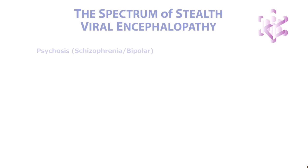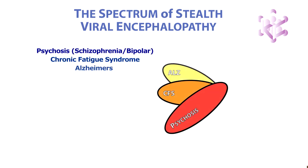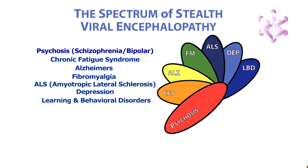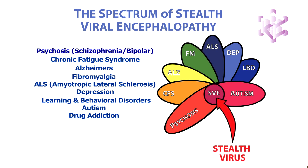The brain is particularly susceptible to symptomatic illnesses caused by stealth-adapted viruses. I've cultured these viruses from many patients with non-inflammatory, neurological, and psychiatric illnesses. I am confident that they are the primary cause of autism and chronic fatigue syndrome.